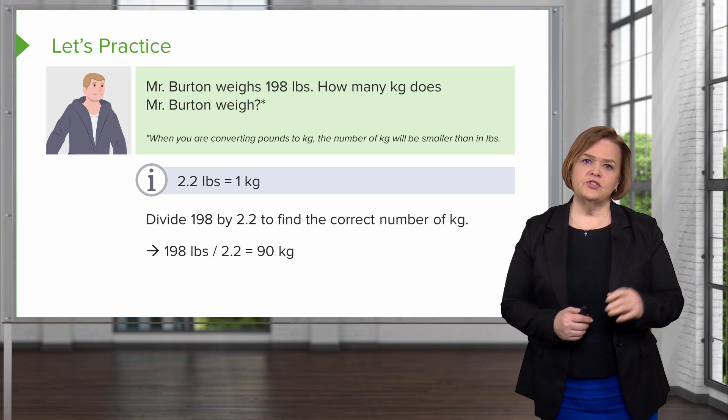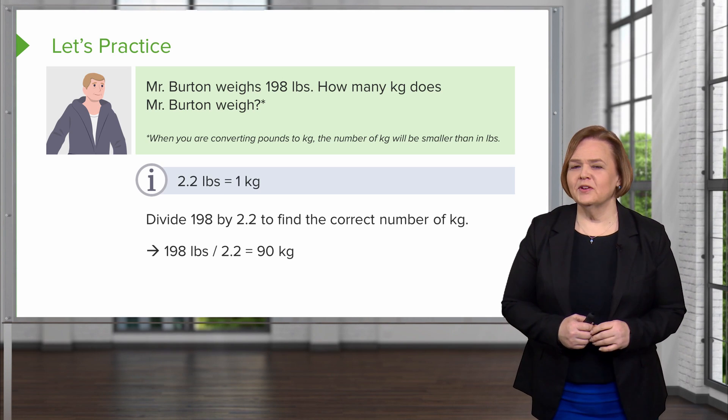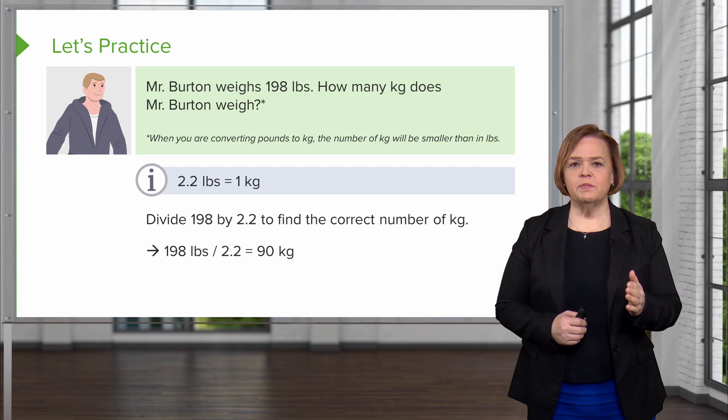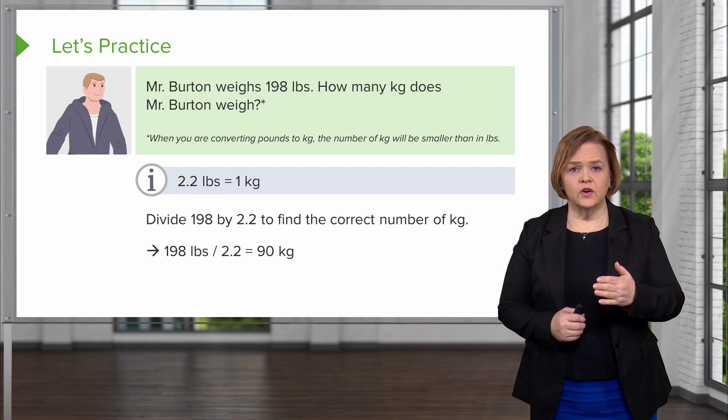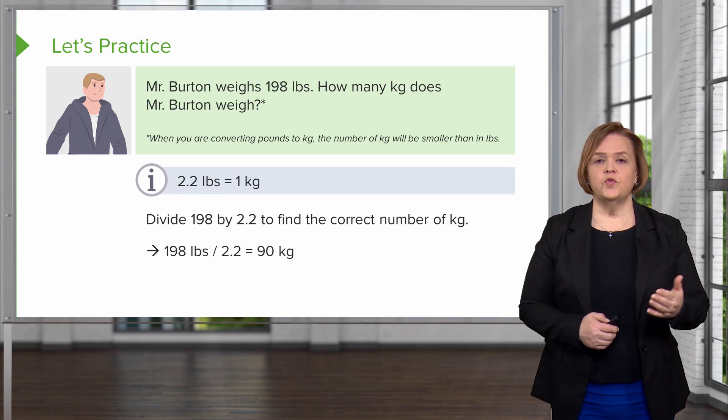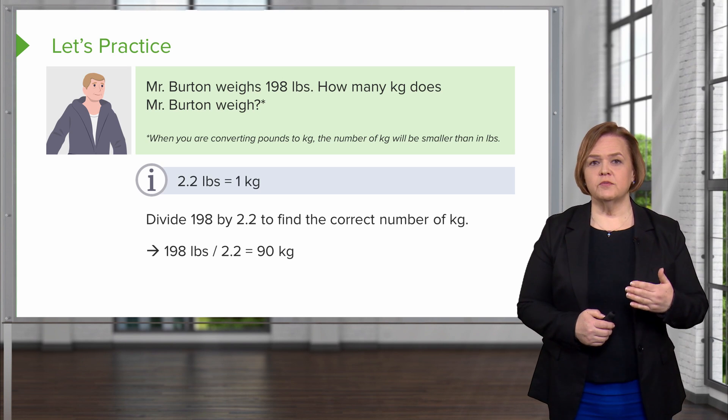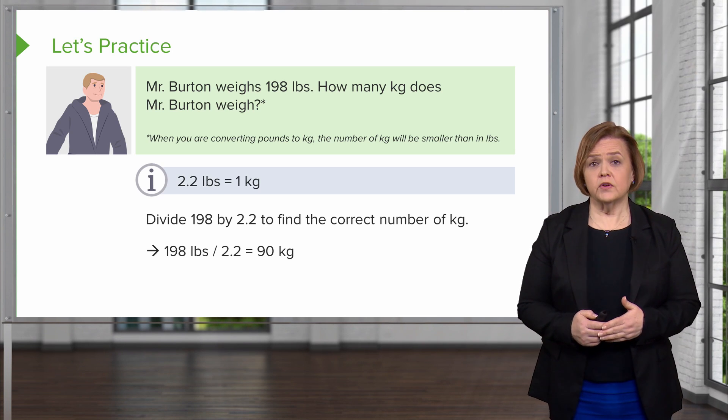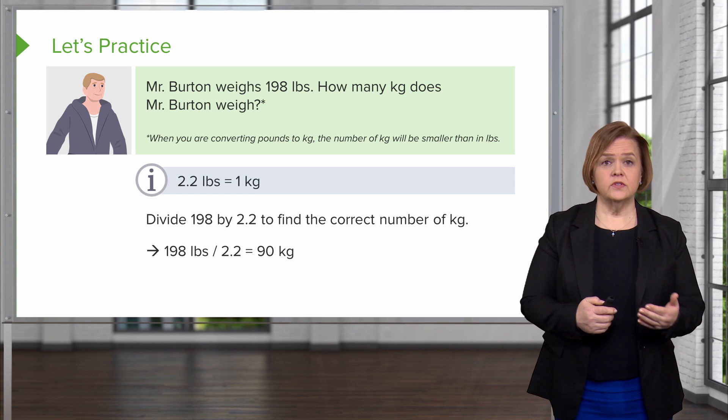See? Thank you, Mr. Burton, for having such a perfectly appropriate kilogram weight. So 198 pounds divided by 2.2, which is the number of kilograms in a pound, equals 90 kilograms. So if we're going to do a weight-based medication for Mr. Burton in kilograms, we've now converted his weight from pounds to kilograms.